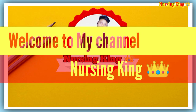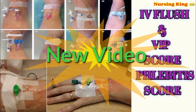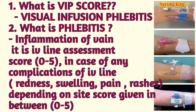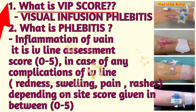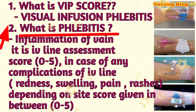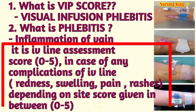Hello guys, welcome back to my YouTube channel Nursing King. Today we are covering a new video regarding the IV phlebitis and VIP score. VIP means Visual Infusion Phlebitis — phlebitis means inflammation of the vein. The VIP score is the IV line assessment score ranging from 0 to 5, used in case of any complication of the IV line.